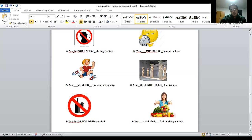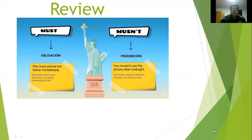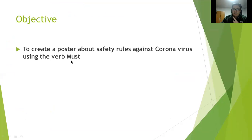Esa era la actividad de la semana pasada y el pequeño repaso que teníamos para hoy. Ahora vamos a explicar la actividad de esta semana. El objetivo es crear un poster — to create a poster about safety rules against coronavirus. For that, we're going to use the verb must. Vamos a crear un poster con reglas de seguridad contra el coronavirus usando el verbo must.